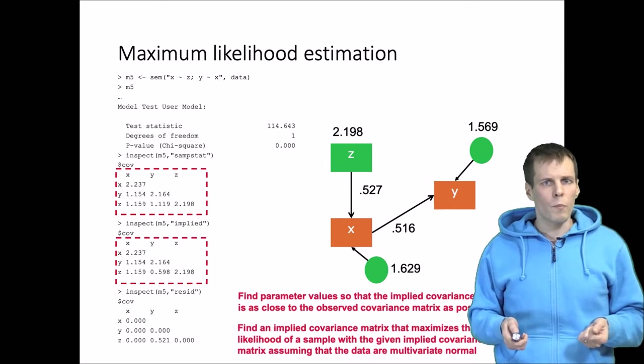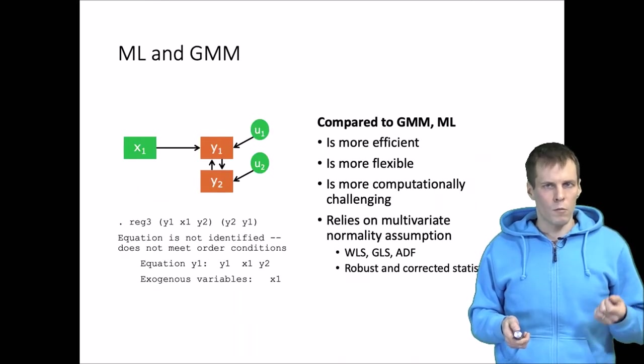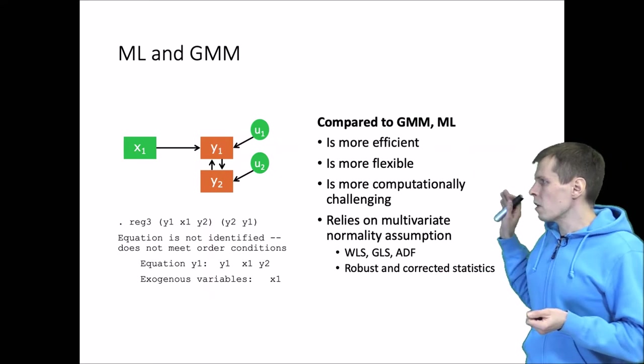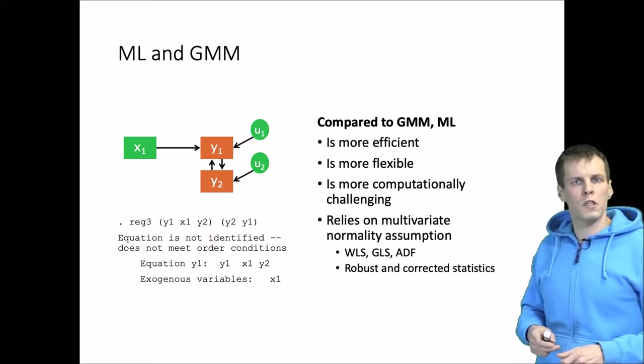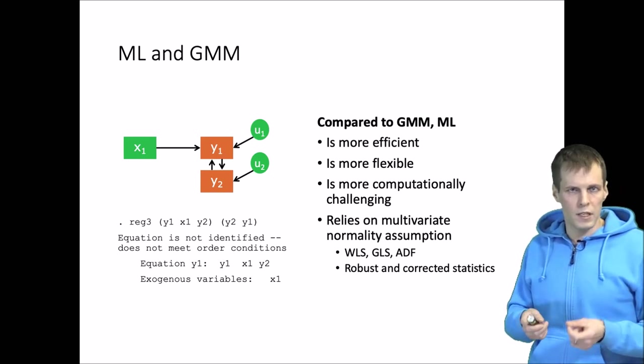So how does this technique compare against the GMM, the other modern alternative? Maximum likelihood is more efficient. The reason why it is more efficient is that we introduce the multivariate normality assumption which GMM does not make.